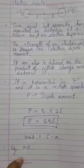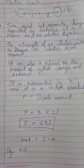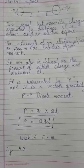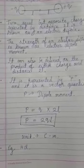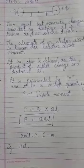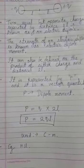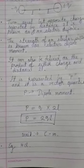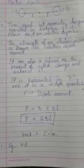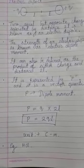Let's take an example: HCl. If you dissociate it, you will have one H-plus and one Cl-minus, with a certain distance between them. So you can consider this as an electric dipole.